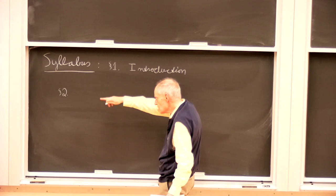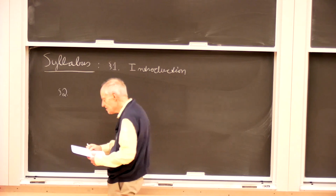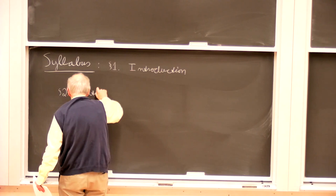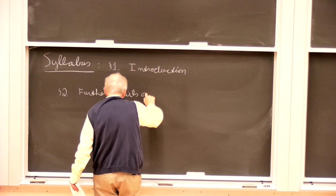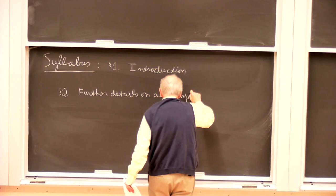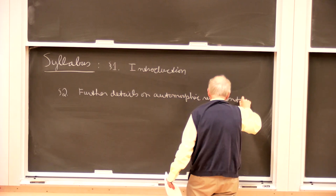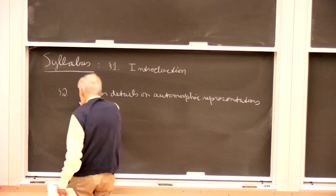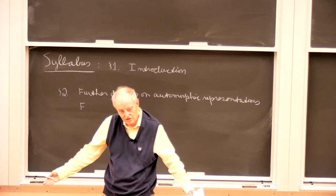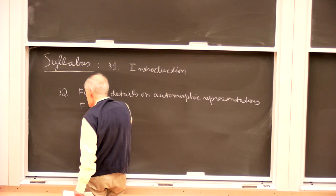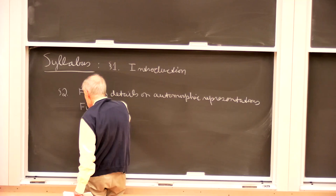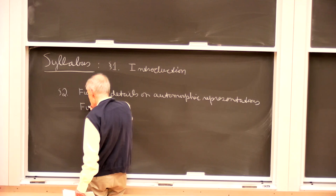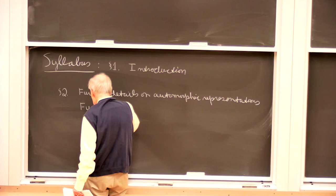Some of the things I'm going to allude to, maybe starting today, I would want to talk about in more detail, although not with all the precise definitions. So let's say further details on automorphic representations will be one section. And the big conjecture in the Langlands Program — the conjecture on which everything else hangs, at least until maybe 20 years ago when a second partner conjecture was added — is called functoriality. It didn't acquire that name in 1969 when Langlands wrote his original paper; the name came considerably later.